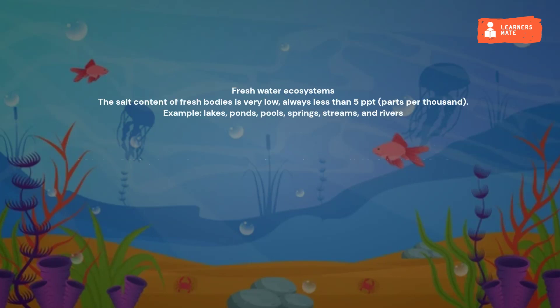Fresh water ecosystems: the salt content of fresh water bodies is very low, always less than 5 ppt (parts per thousand). Examples include lakes, ponds, pools, springs, streams and rivers.